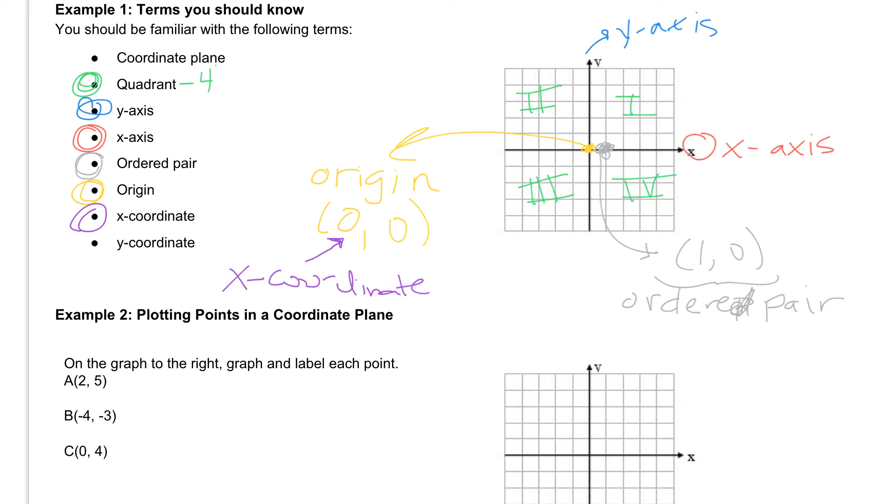And then we have the y-coordinate. The y-coordinate is the second number in the ordered pair. If we take a look at our other ordered pair, the y-coordinate would be the 0, that second one in the ordered pair. If you have questions on any of these terms, please let me know.